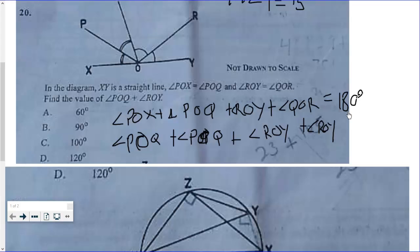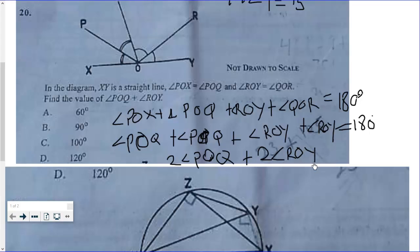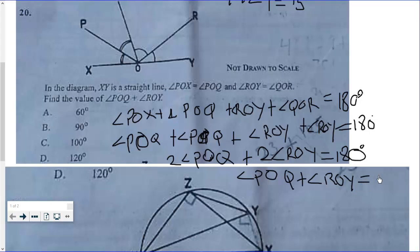This whole thing should give us 180 degrees. Simplifying, we get 2 times angle POQ plus 2 times angle ROY equals 180 degrees. Dividing through by 2, we get angle POQ plus angle ROY equal to 90 degrees. Hence the answer is B.